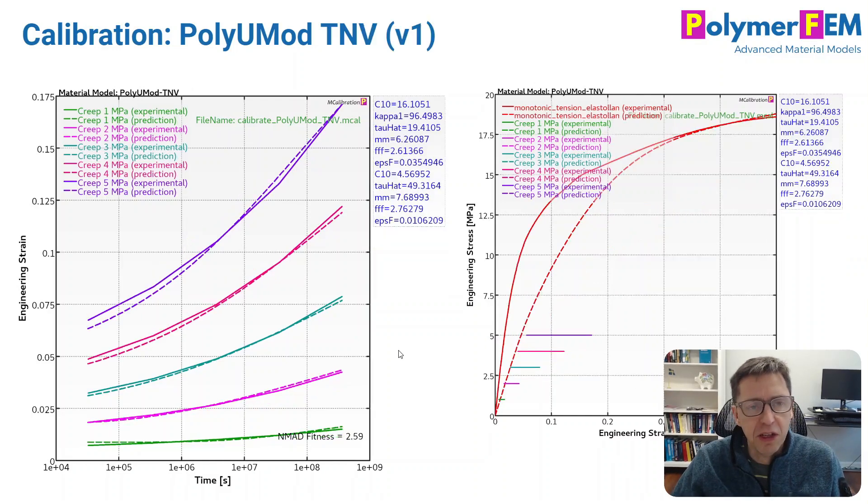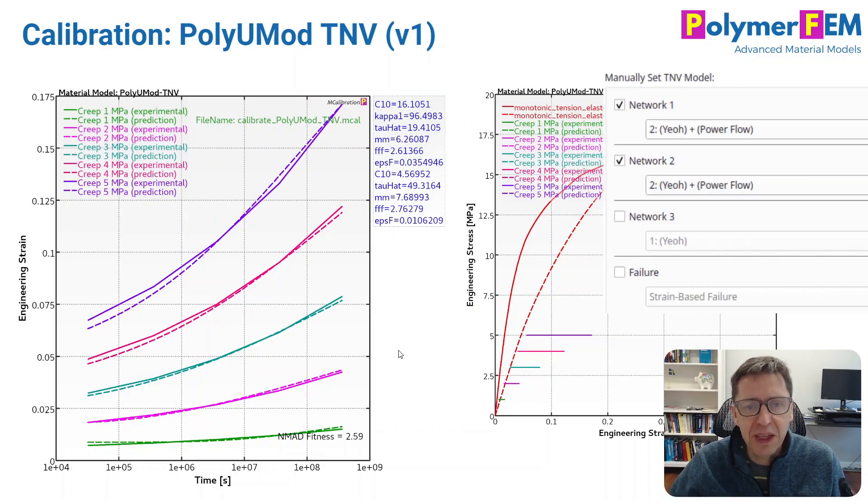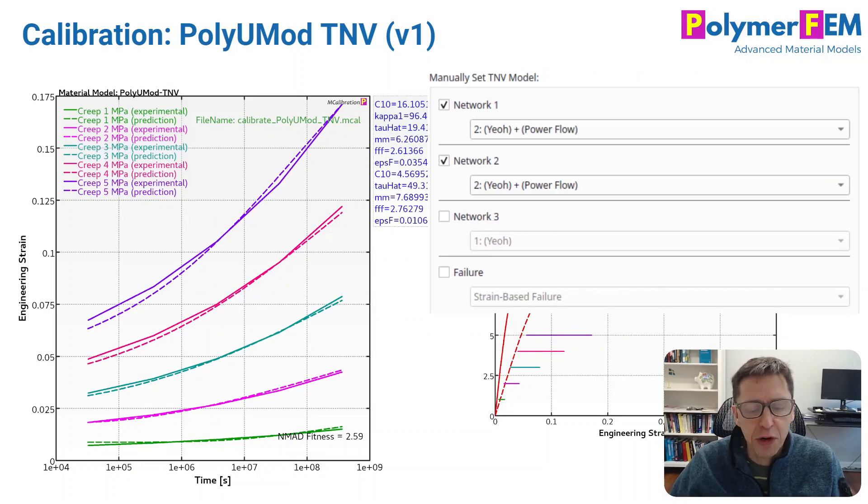And again, as we've seen in many types in the past, the PolyUMod TNV model, which is a more modern version of the TNM model, can do this very well.